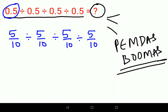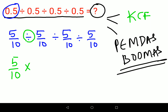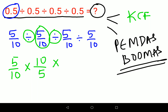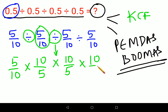Going back to our question, we apply KCF. Keep the first fraction 5/10 as it is. Change the division sign to multiplication. Flip the next fraction: 5/10 becomes 10/5. Apply the same rule to the next division sign — change to multiplication and flip: 10/5. And again for the last one — flip to get 10/5.